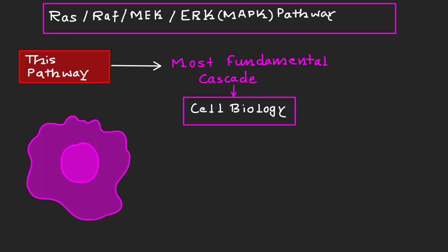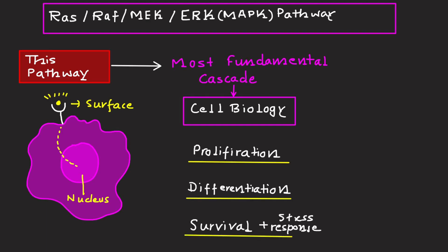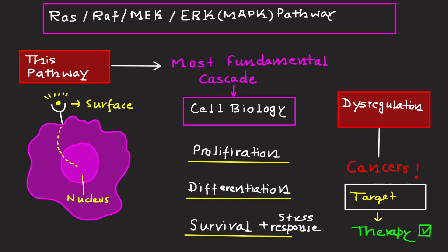This pathway plays a central role in transducing signals from the cell surface to the nucleus, meaning it is involved in sending signals from the extracellular environment to the nucleus. It organizes processes such as cell proliferation, differentiation, survival, as well as stress responses. Its dysregulation is commonly linked to cancer and other diseases, making it a critical target for therapeutic interventions.